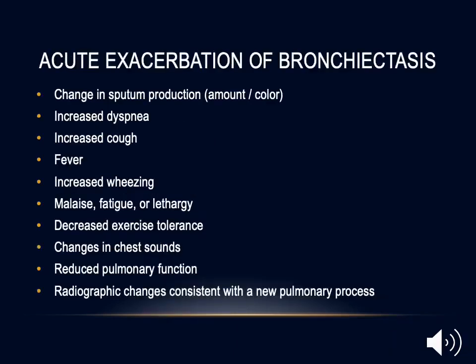Bronchiectasis is more of a chronic illness with frequent infections. After a while, patients manifest acute exacerbations of bronchiectasis, which represent either increased inflammation due to infection or frank pneumonia. Signs include change in sputum production in amount or color, increased dyspnea or decreased exercise tolerance, increased cough, fever, increased wheezing, change in chest sounds, fatigue or lethargy, reduced lung capacity compared to baseline, and sometimes a new pulmonary process on chest X-ray. All or any of these factors should be considered an exacerbation, and some centers treat this aggressively to prevent progressive deterioration.